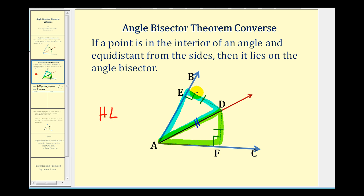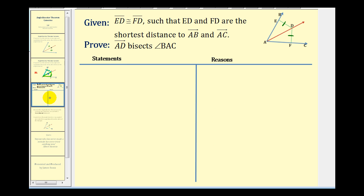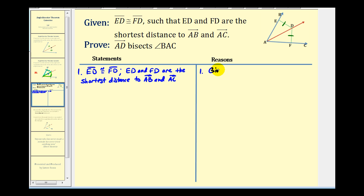The corresponding hypotenuse and corresponding legs are congruent, so the two triangles are congruent — because they are right triangles. Let's write the proof out. We start by stating the given. Because the lengths of ED and FD are the shortest distances to the two blue rays, segment ED must be perpendicular to ray AB, and segment FD must be perpendicular to ray AC.